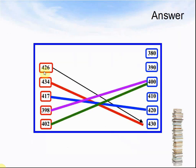Answer: 426 rounded to the nearest ten is 430. 434 rounded to the nearest ten is also 430. 417 rounded to the nearest ten is 420. 398 rounded to the nearest ten is 400. 402 rounded to the nearest ten is 400.